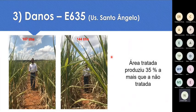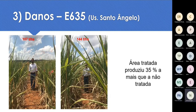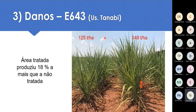Para terem uma ideia da importância dos nematóides e do dano que causam, trouxe fotos recentes de um experimento na Usina Santo Ângelo. Com cinco ou seis meses de idade, a testemunha produziu 107 toneladas por hectare e a área tratada com nematicida produziu 144 toneladas. A área tratada produziu 35% a mais que a não tratada. Outro exemplo na Usina Tanabi: a área tratada produziu 18% a mais. Isso dá uma boa ideia dos danos que os nematóides causam e como são parasitos muito importantes para a cana.